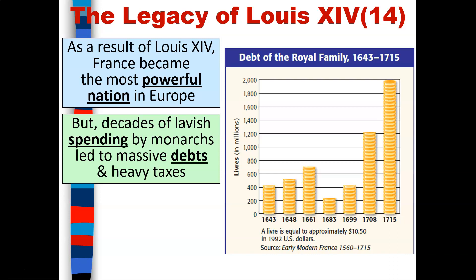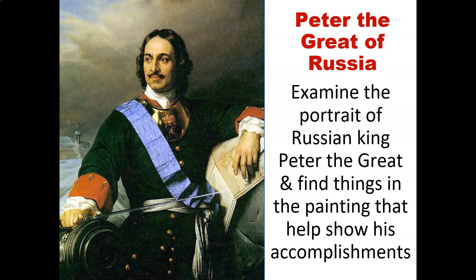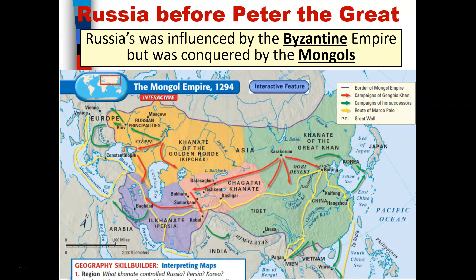The legacy of Louis the 14th left France essentially broke with enormous debt. On one hand, France became the most powerful nation, but many decades of excessive spending by monarchs led to massive debts and heavy taxes that people could not pay. Eventually the French people became very angry and decided to overthrow the monarchy, and as a result the French Revolution took place.